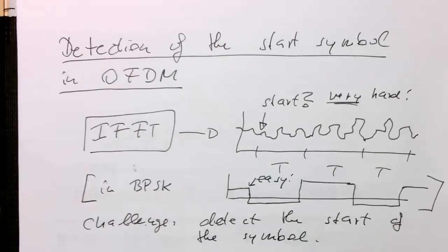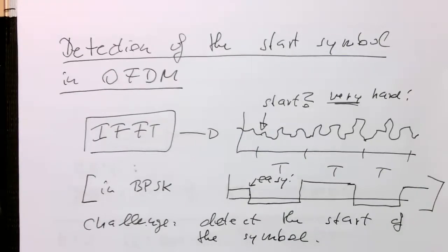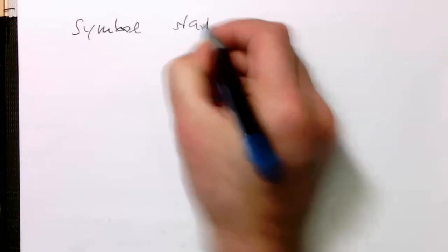To make it even worse, it has to be detected really by exactly the right sample. It's not just okay if we just find this roughly. How do we manage now to get this exactly by the sample detection of the start of the symbol? Symbol start detection.